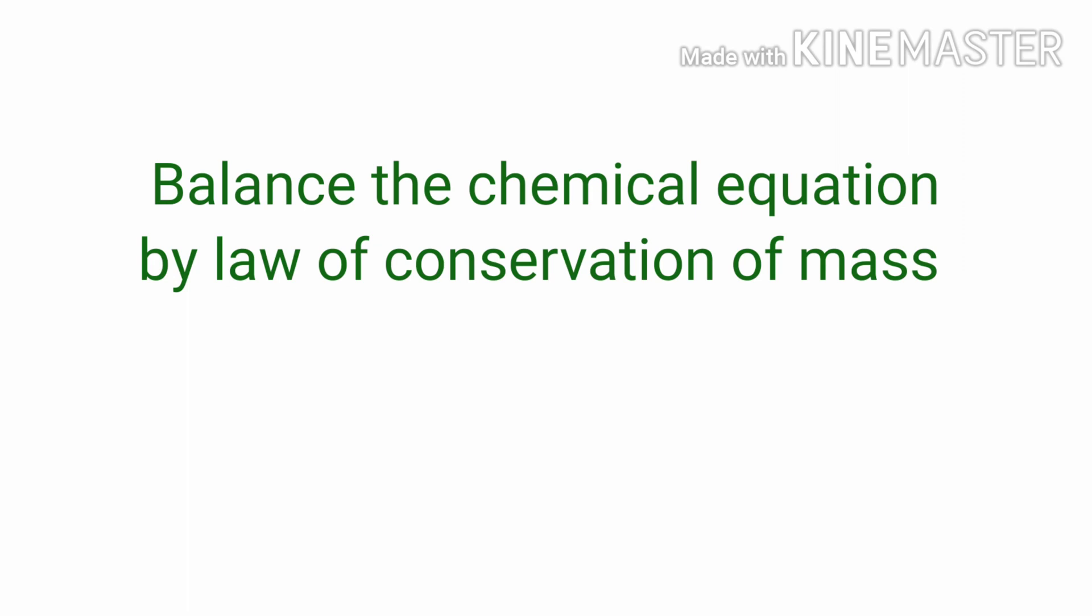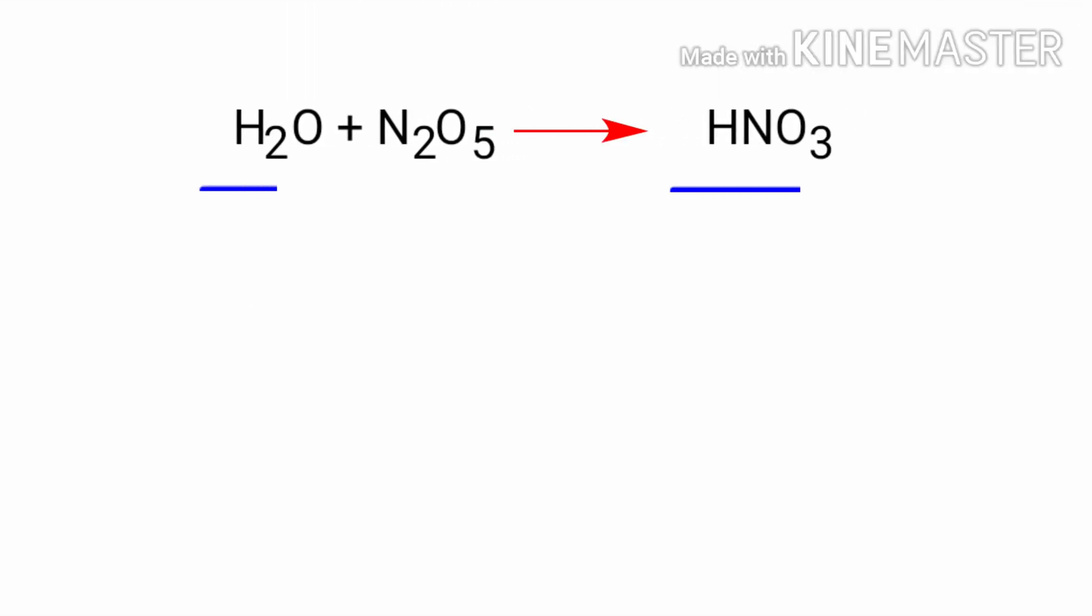Balance the chemical equation by law of conservation of mass. Water plus nitrogen pentoxide gives us nitric acid. In this equation the reactants are water and nitrogen pentoxide and the product is nitric acid.